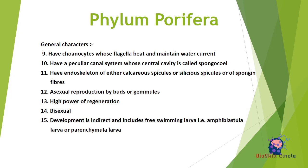Asexual reproduction generally occurs by fragmentation of the external body or by gemmules, which are internal buds. These organisms have a very high power of regeneration. Most sponges are bisexual or hermaphrodite. Development is indirect and includes free-swimming larvae — the amphiblastula larva, which is half flagellated and half non-flagellated — or the parenchymula larva, used for dispersion.